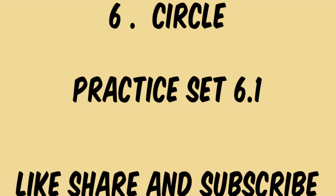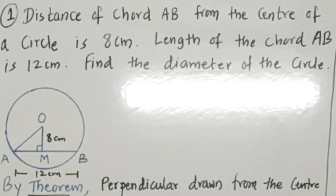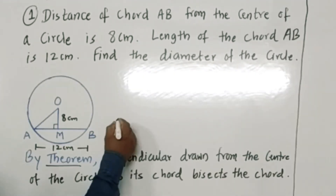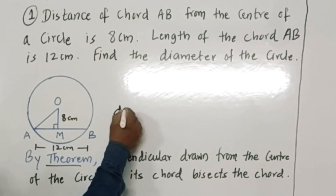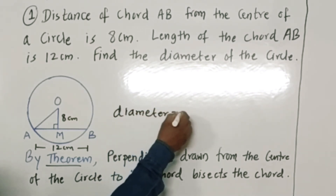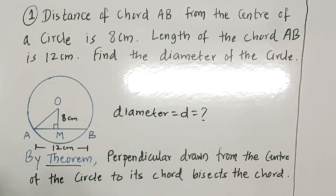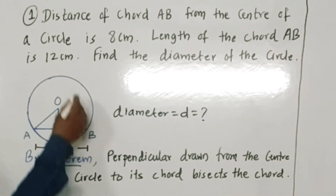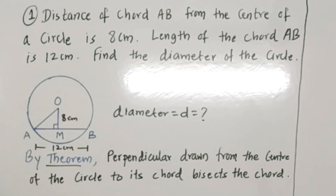First example: the distance of chord AB from the center of the circle is 8 centimeters, and the length of chord AB is 12 centimeters. Find the diameter of the circle. Here we have to find diameter D of the circle. Consider the circle with center O and chord AB.